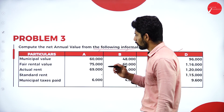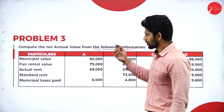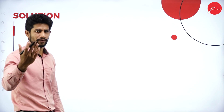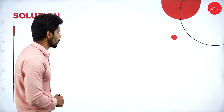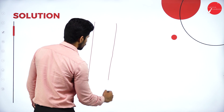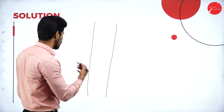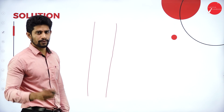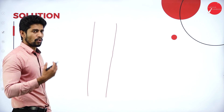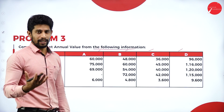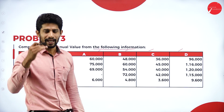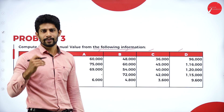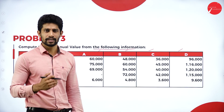Problem number 3: compute the net annual value from the following information. They are given four houses — house 1, house 2, house 3, house 4 — with information on municipal value, fair rental value, actual rent, standard rent, and municipal taxes paid. The gross annual value formula is: municipal value and fair rent, whichever is high; that highest amount compared with standard rent, whichever is low; then that lower value compared with actual rent, whichever is high.